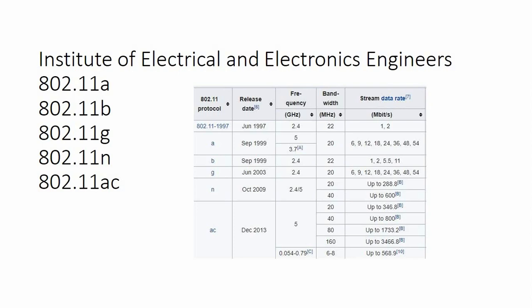802.11a, you know the frequency, 2.4 gigahertz, the highest stream rate is 54 megabits per second. October 2009, the 802.11n was released with 2.4 frequency. The maximum data rate is 600 megabits per second.